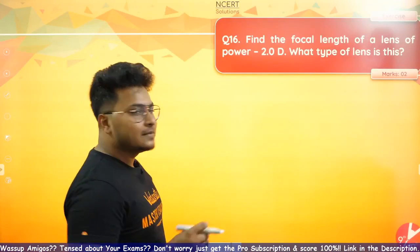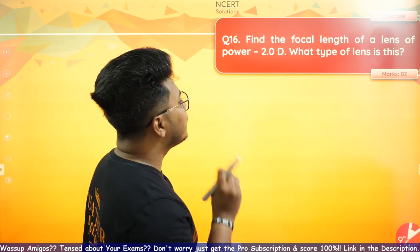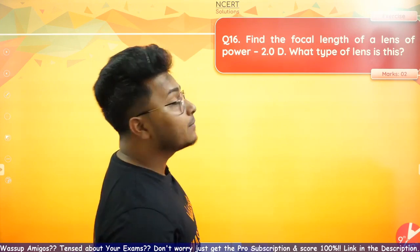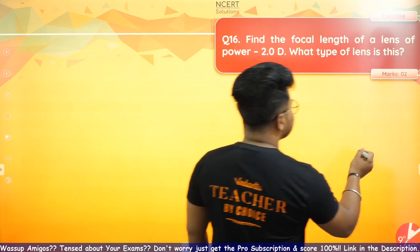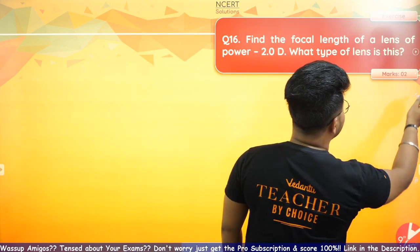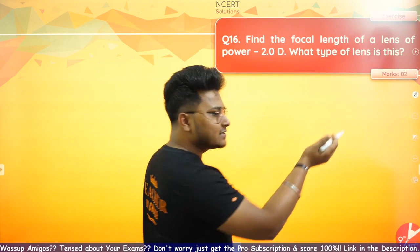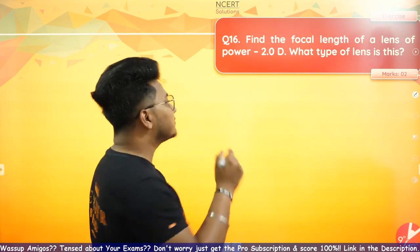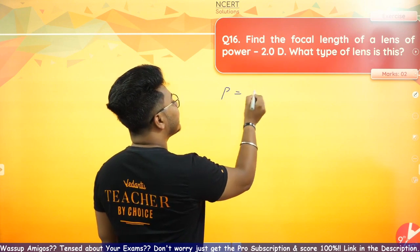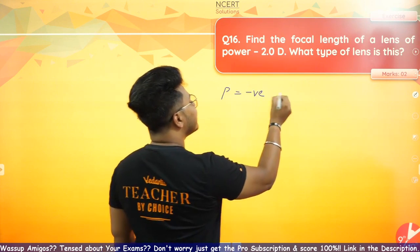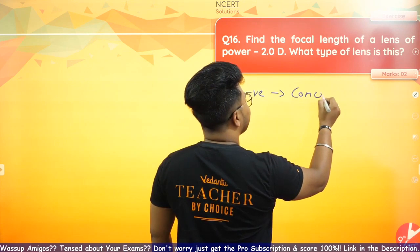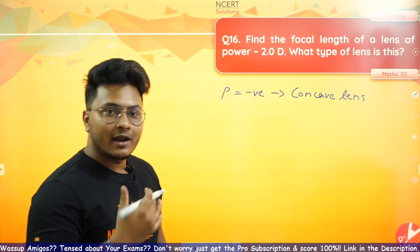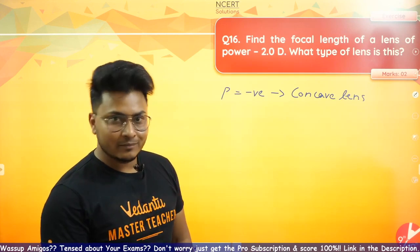Question number one — a very simple question: find the focal length of a lens of power minus 2.0D. What type of lens is this? It's negative, so with sign convention you should know — if power is negative, then it's definitely a concave lens. Our concave lens power is negative and its focal length is also negative.